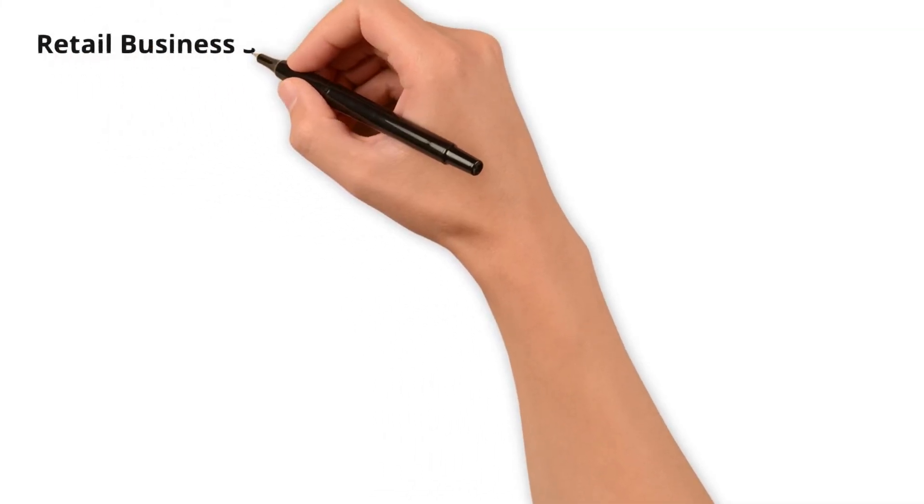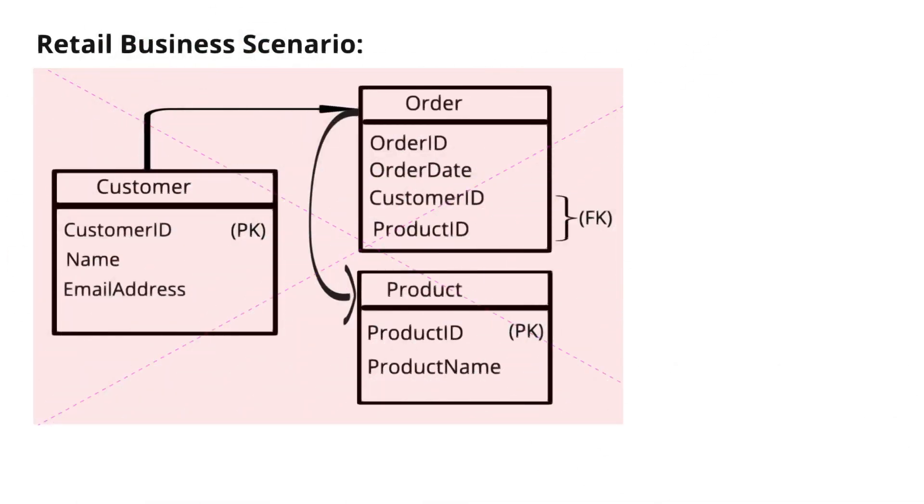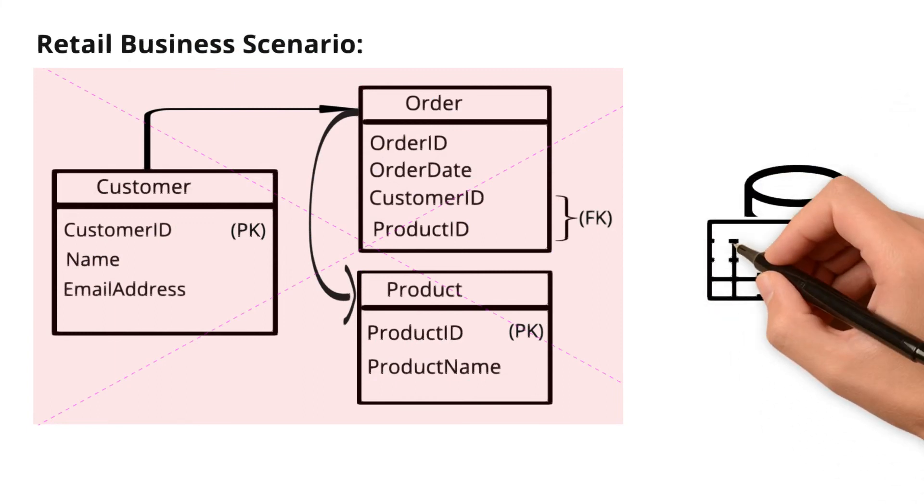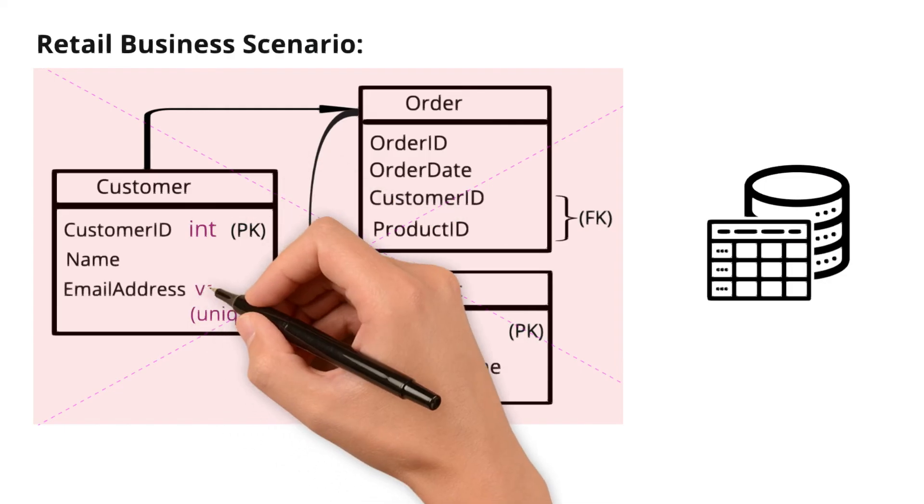Referring to our retail business scenario, the customer, order and product entities from the logical data model are now transformed into actual database tables. The customer ID becomes an integer primary key, and email address is defined as the unique worker column.